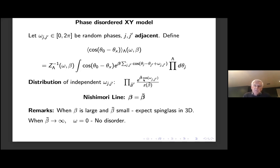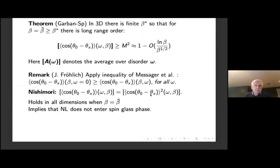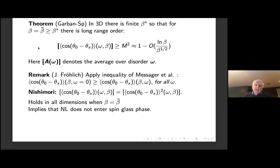Here is our result with Christophe. If you're on the Nishimori line — both betas match — then if I take the spin-spin correlation and average over the disorder, I get a positive magnetization with an error term. That's long-range order. However, we can only prove this along the Nishimori line. The rectangular brackets represent the disorder average. The statement is that after we do this averaging, we get a magnetization. The result is only valid on the Nishimori line.